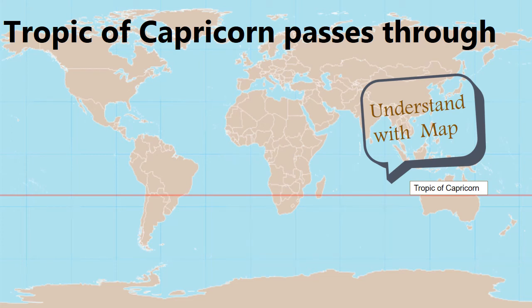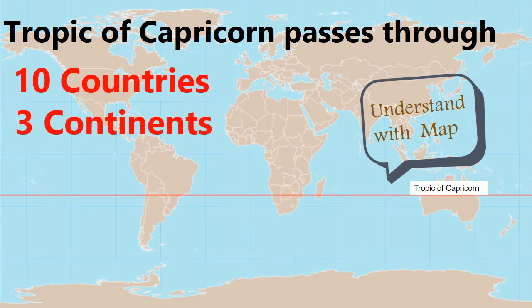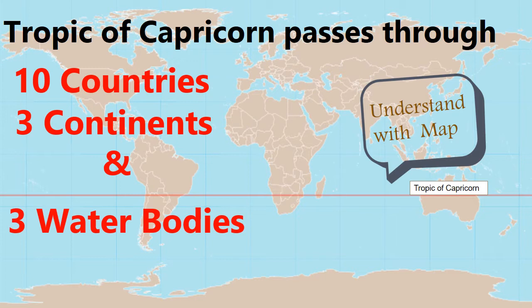Hello friends, welcome to my channel. Today's topic is which countries lie on the Tropic of Capricorn, or you can say the Tropic of Capricorn passes through these countries. There are ten countries, three continents, and three water bodies where the Tropic of Capricorn passes through. So let's begin.